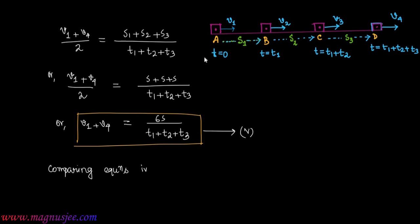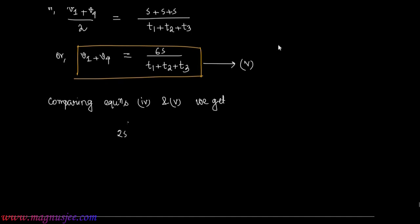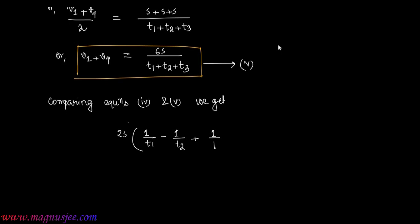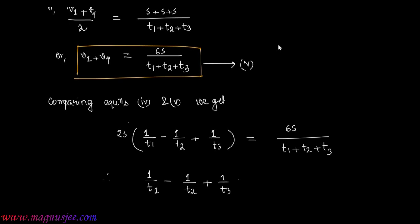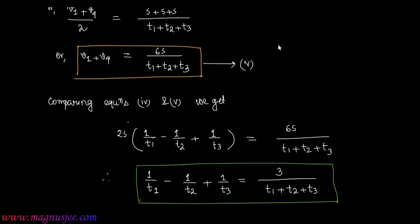Comparing Equations 4 and 5: 2S(1/T1 - 1/T2 + 1/T3) = 6S / (T1 + T2 + T3). Simplifying, we get 1/T1 - 1/T2 + 1/T3 = 3 / (T1 + T2 + T3). Hence the equation is proved.